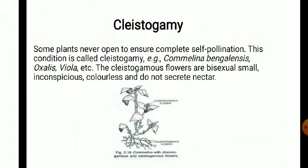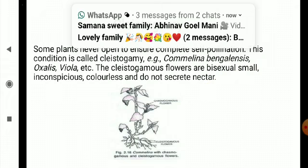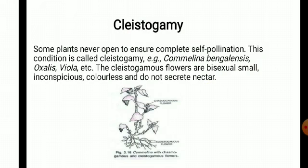The second method is cleistogamy. Cleistogamy means that pollination occurs in closed flowers. When the flowers remain closed, pollen grains cannot go out and can only fall on the stigma of the same flower, ensuring self-pollination. Common examples are Oxalis and Commelina.